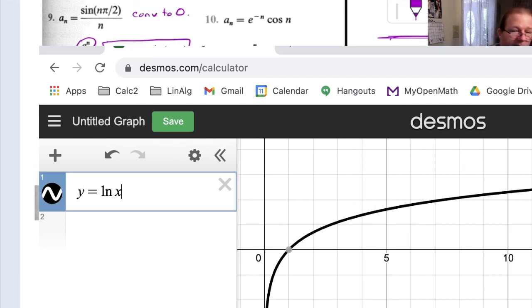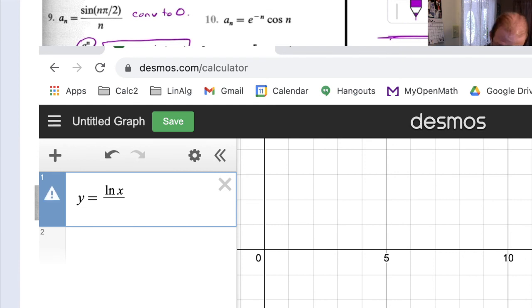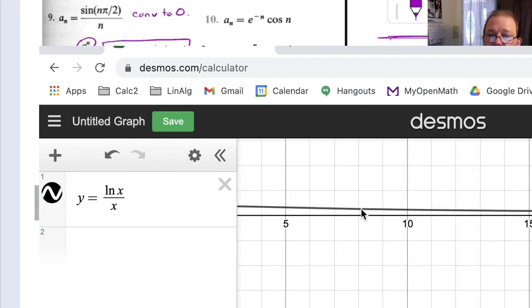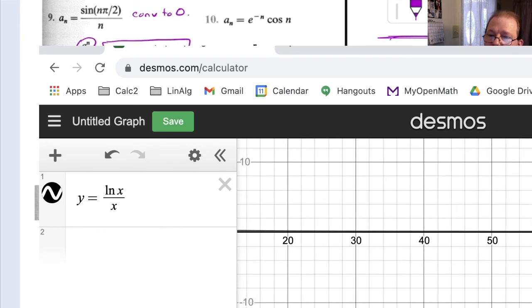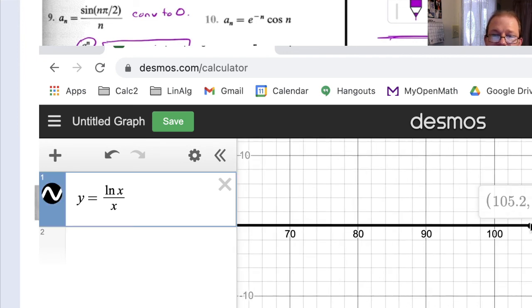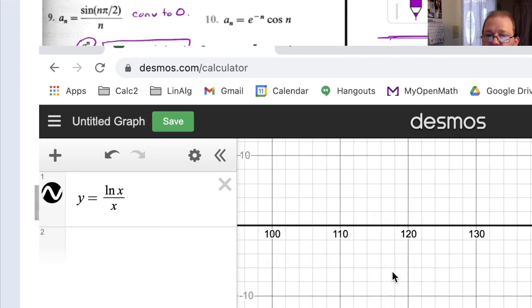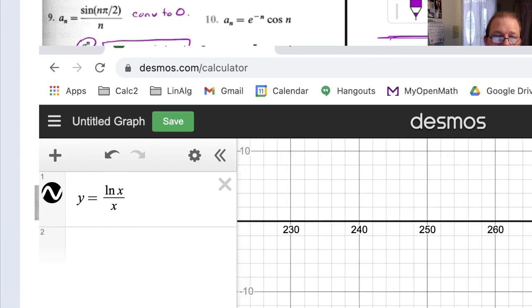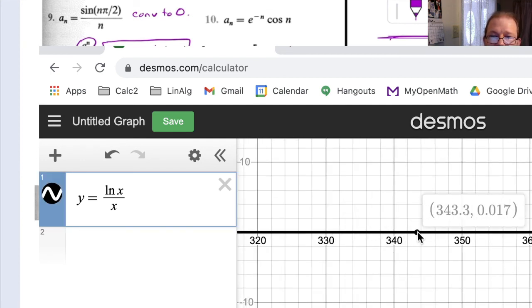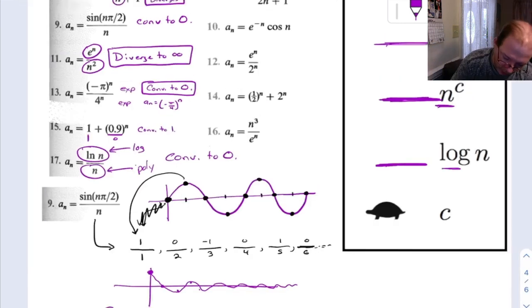If I put in y equals natural log x. Again, y equals natural log x over x. Yeah, you can see this thing goes to zero. It's a little bit slow, but if you come out here to something big, the number is getting smaller and smaller.